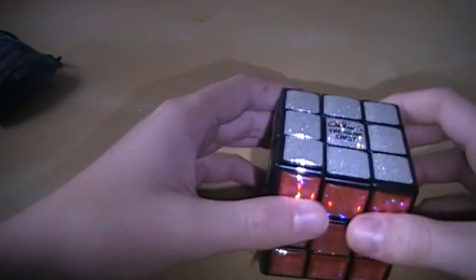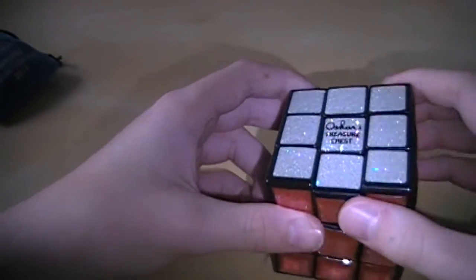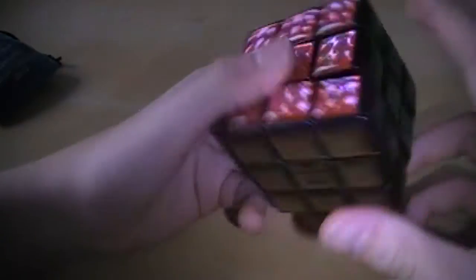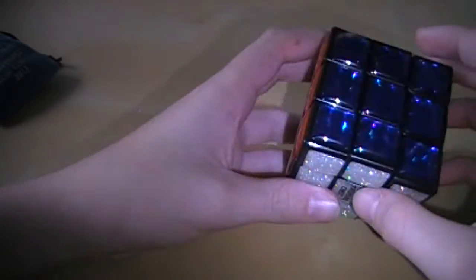You can get them on Mefferts. And, Amazon used to have them. But, I think it's still out of stock there. So, yeah. This is the Oskar's treasure chest. It's just a nice, it's a nice, just cube to have. It's not really anything to speedcube with or anything.